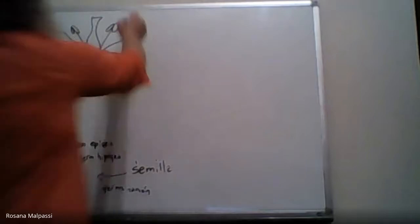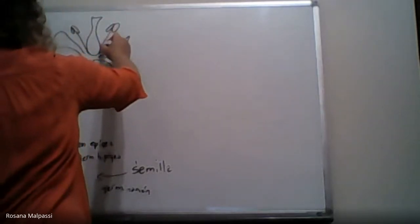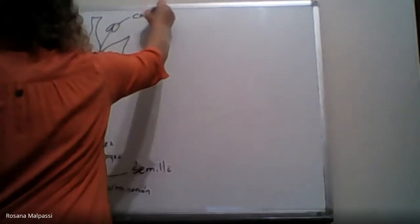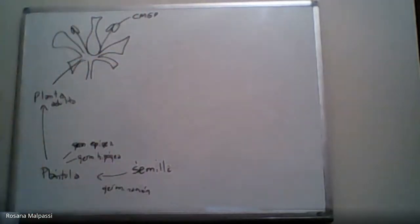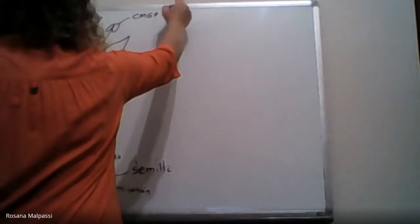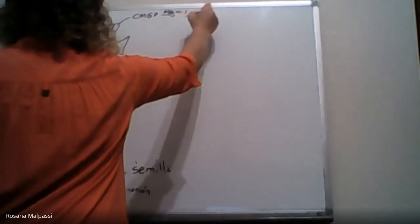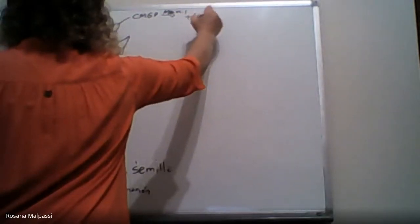Si nos vamos al androceo, vemos que está formado por estambres, estos estambres tienen un filamento y tienen una antera. En esa antera hay células madres de grano de polen. ¿Y qué tipo de división van a sufrir estas células madres de grano de polen? Meiosis, todo lo que es germinal.